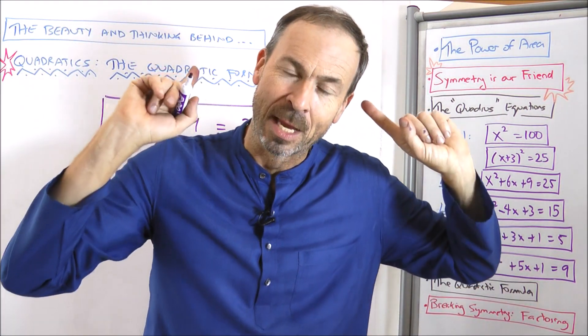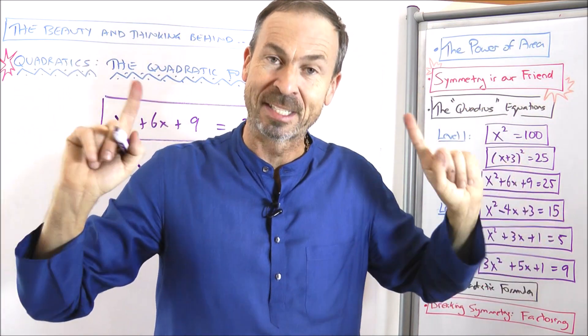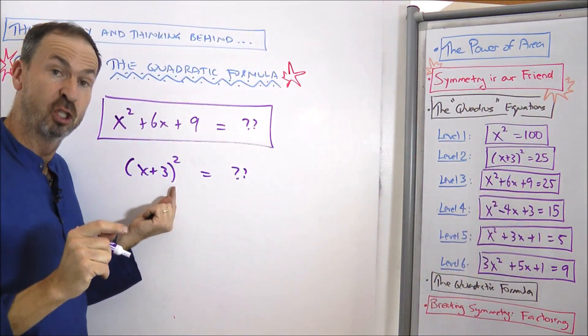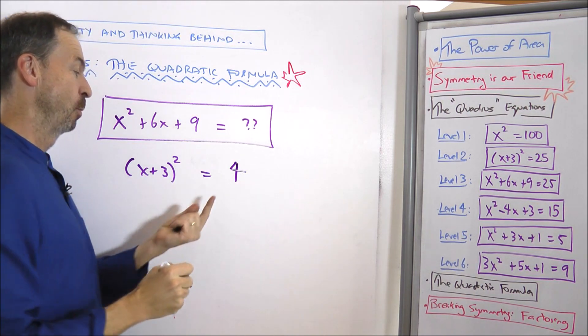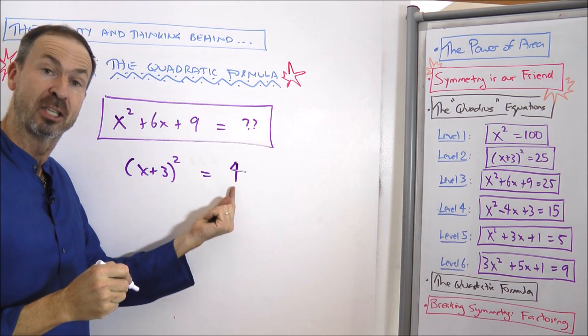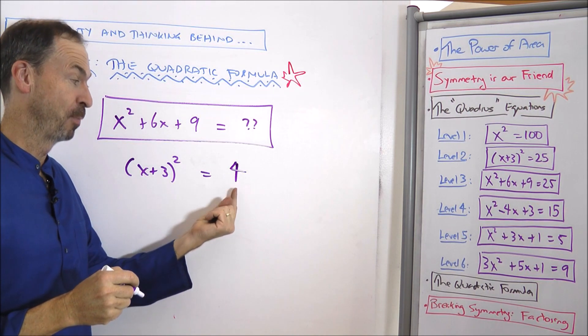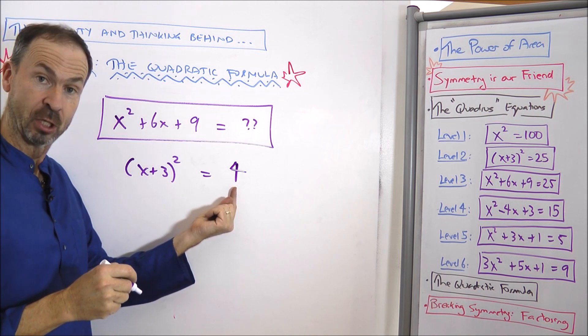But here's the thing. Last lecture, we definitely saw that sometimes quadratic equations have two solutions. For example, if I had put a 4 here, we know it's going to be two solutions. This has two possible square roots, namely the positive version, 2, or the negative version, negative 2.